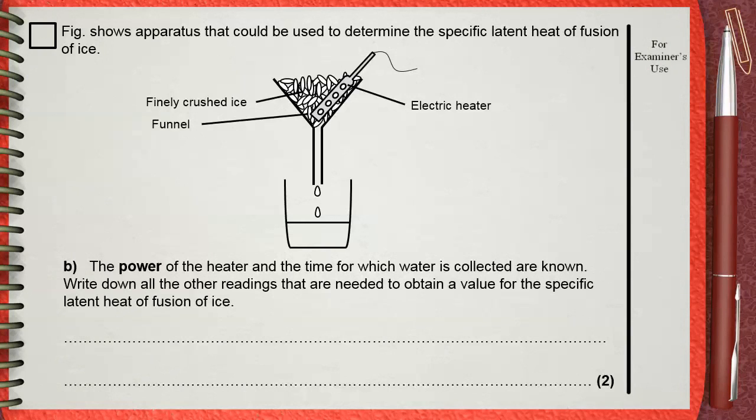The power of the heater and the time for which water is collected are known. Write down all the other readings that are needed to obtain a value for the specific latent heat of fusion of ice.